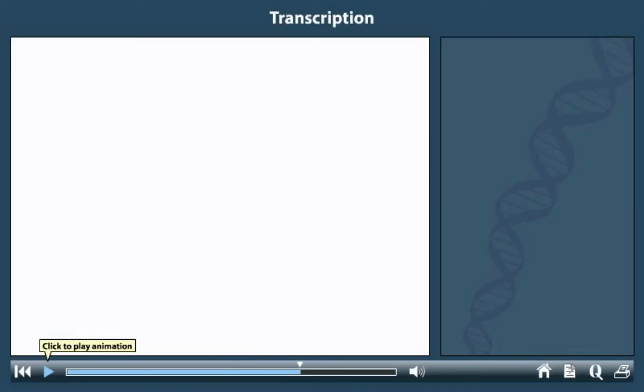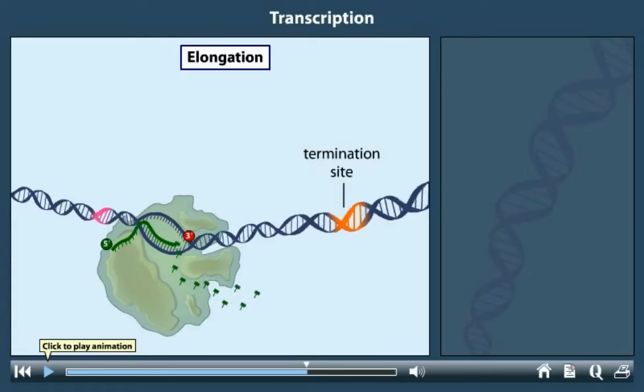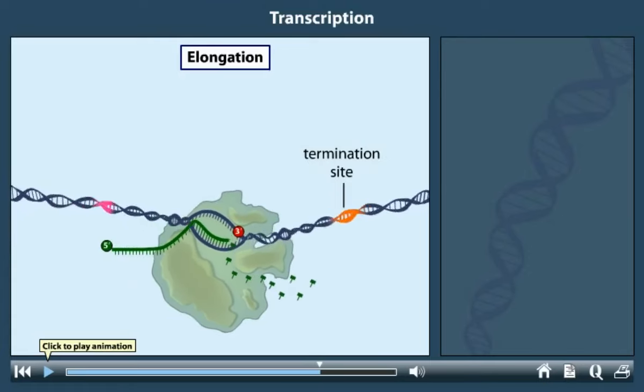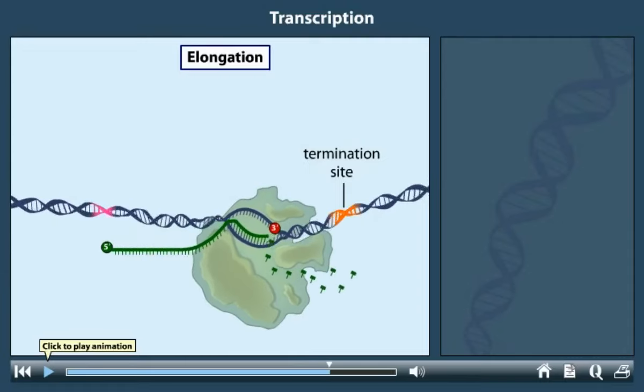The DNA double helix rewinds as the RNA polymerase moves through. Like the unwinding, the rewinding is an energy-requiring process that is accomplished by RNA polymerase.